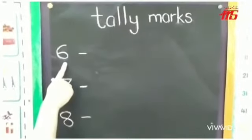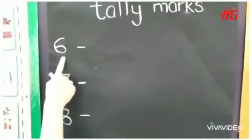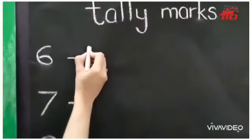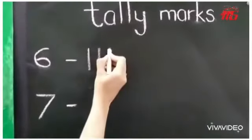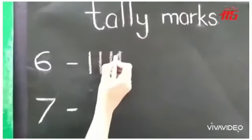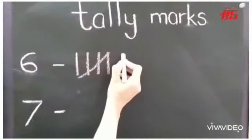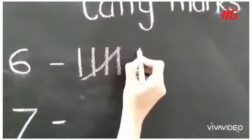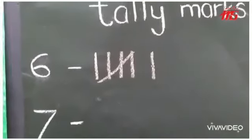It's number 6. Let us show the tally marks for number 6. 1, 2, 3, 4 — number 5 shuts the door. Now you have to leave a little space and then draw the 6th line. It is showing number 6.